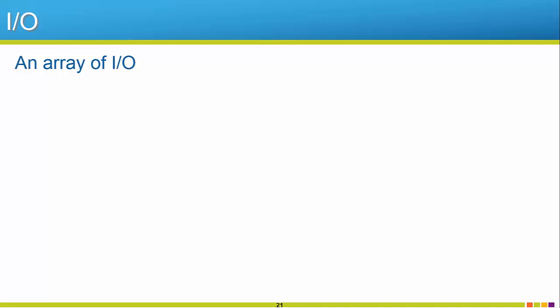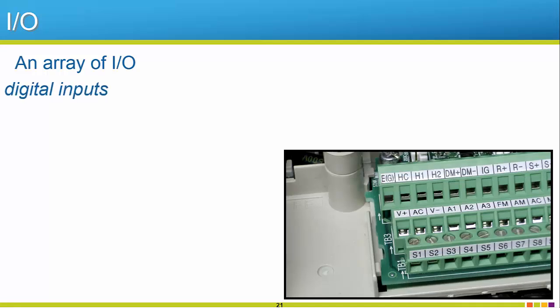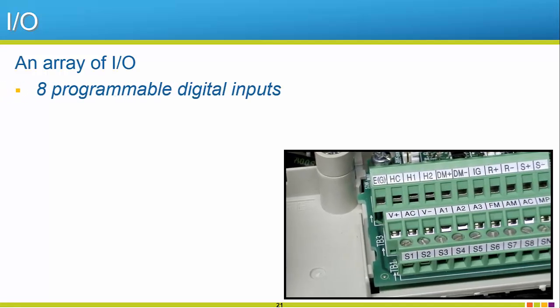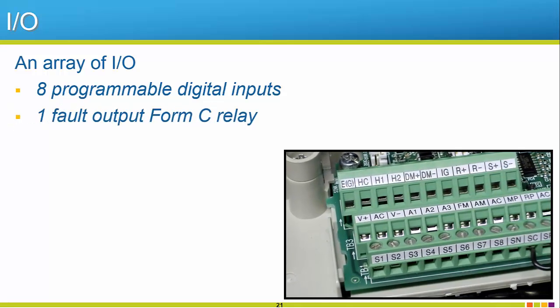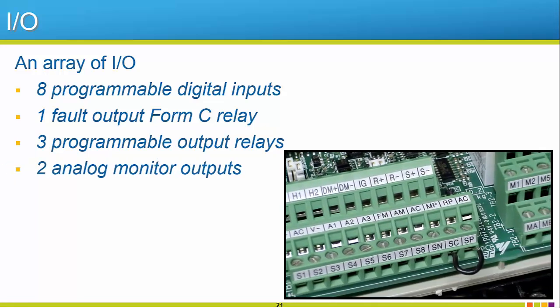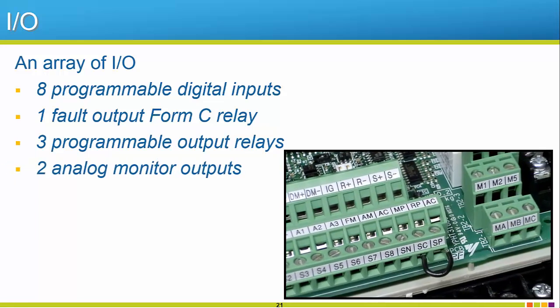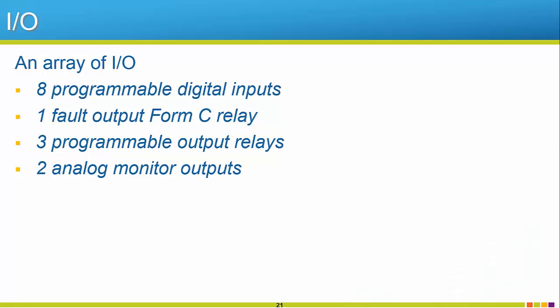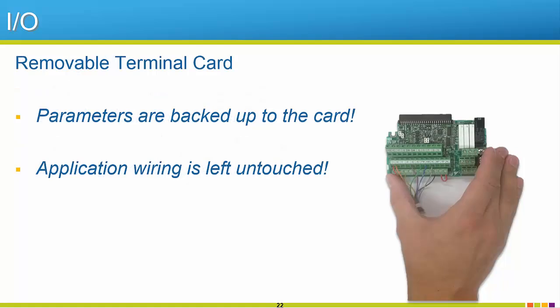The R1000 has plenty of IO to go around. Standard on all R1000s are 8 programmable, optically isolated, digital inputs. There's also one designated fault contact, which operates on a Form C relay, and 3 additional programmable contacts, which are Form A relays. Lastly, there are two programmable analog output monitors, which can source 0-10 volts or 4-20 milliamps. All of this robustness that is the R1000s IO is located on the removable terminal card. The removable terminal card is beneficial as it automatically backs up any programming changes to the unit. In addition to all the programming being backed up, your wiring is also stored on here. So unit replacement will fly by in no time, minimizing application downtime since all the wiring does not need to be re-landed and the parameters are already backed up.